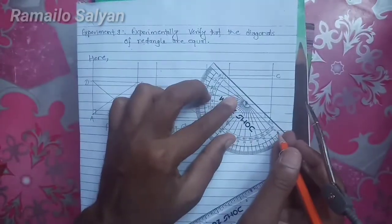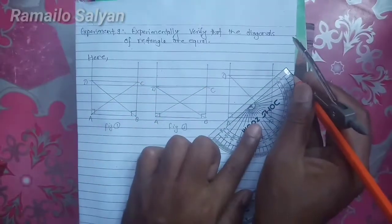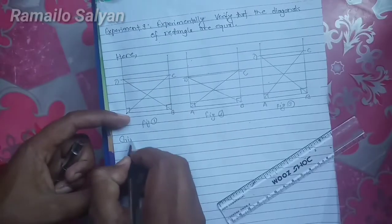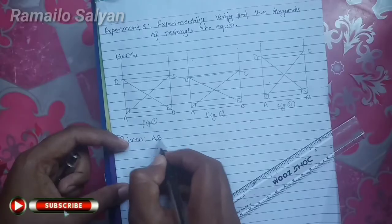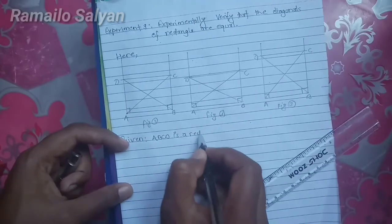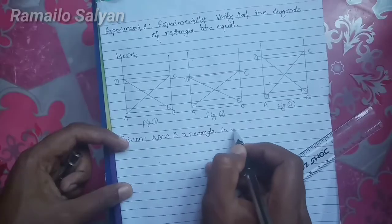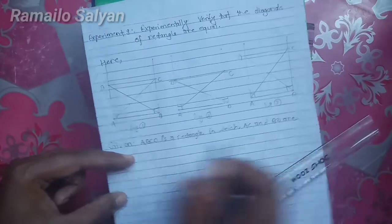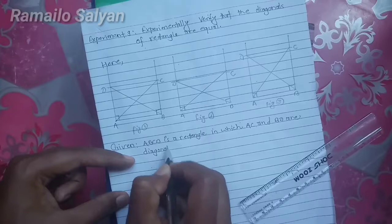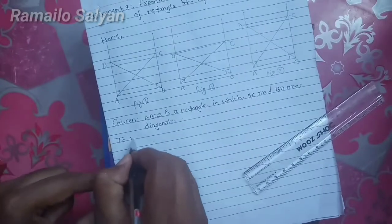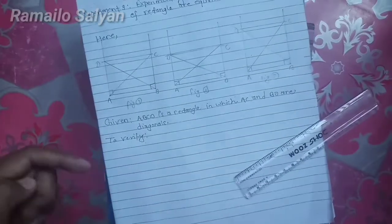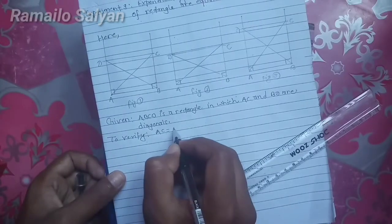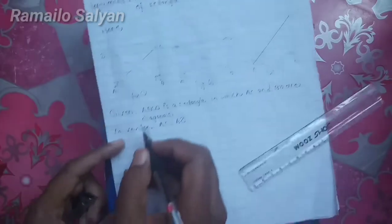This is also an ABCD rectangle. Join the two opposite vertices. ABCD is a rectangle — given: ABCD is a rectangle in which AC and BD are diagonals. To verify: diagonals are equal, i.e., AC equals BD.